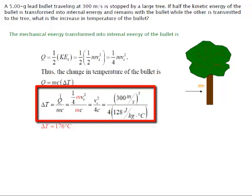Now we can substitute that value for Q that we did in the first step: one quarter mv squared divided by mc. Again, another problem where conveniently the masses cancel out and we're left with the velocity squared divided by four times the specific heat.